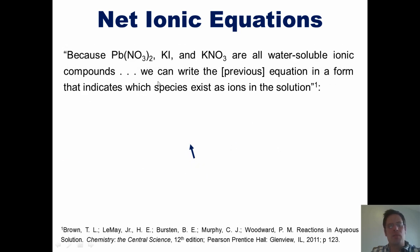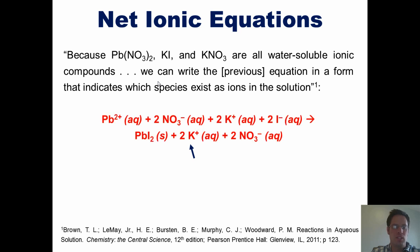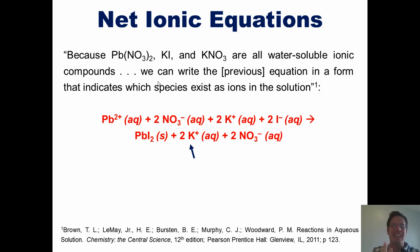Thus, we can write the previous equation in a form that indicates which of the species exist as ions in solution. What I've done is taken each individual compound in the earlier equation and sawed it in half, separating the cations from the anions and writing their charges next to them.